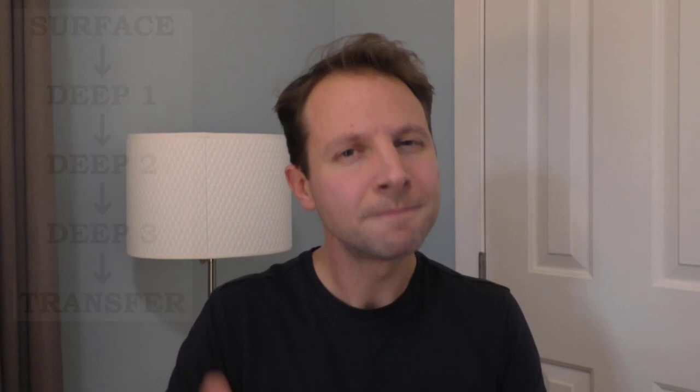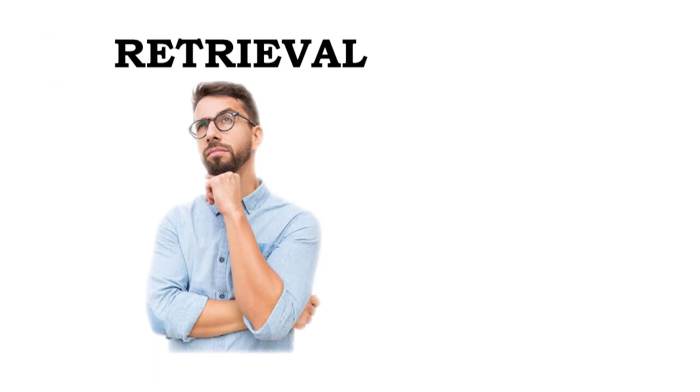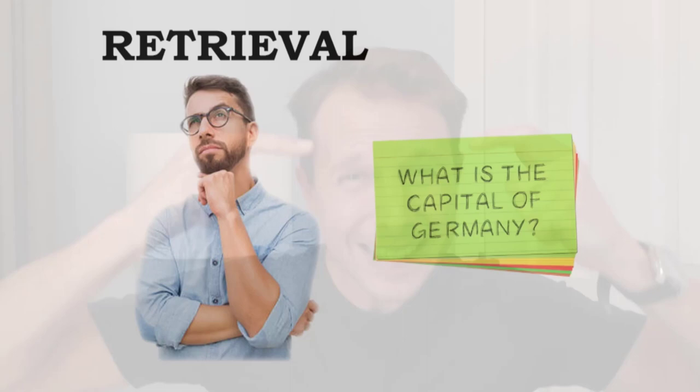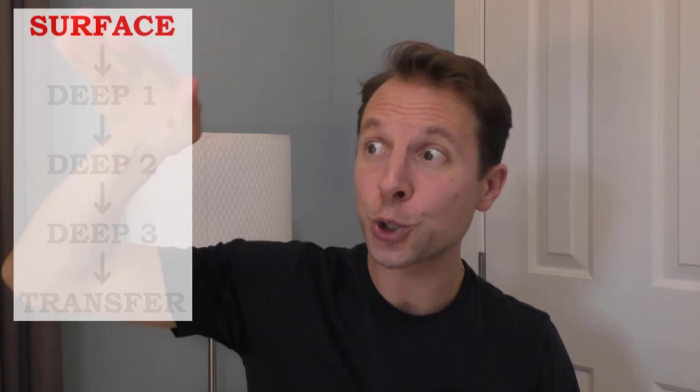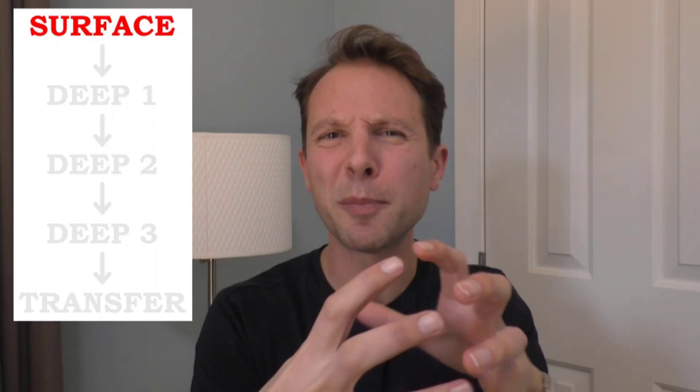Why might this be? Go back to the learning trajectory. Every human being has to start at surface learning, where we are simply building memories and knowledge. Retrieval practice is all about building memories — accessing ideas, reconsolidating them, making deep memories. It is really strong at the surface level. Whereas generative learning — how do these ideas fit together, how do we organize them into units — is aligned more with deep level one. This paper demonstrates that when we align our pedagogical and study practices with where we are on the learning trajectory, our learning will boost simply because we're paying attention to where we're at in that process.